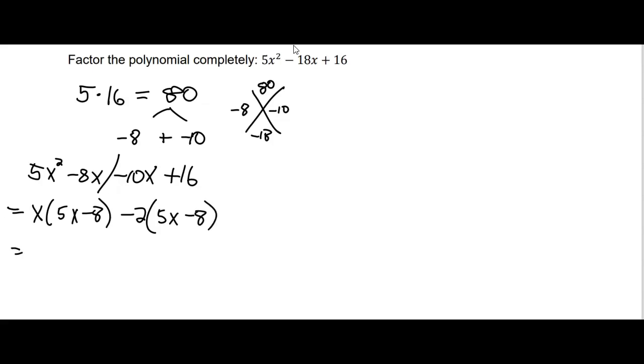We now have a binomial factor of 5x minus 8 in common, leaving us an x minus 2 when we factor it out. This would be the factored form. We could multiply it out to check.